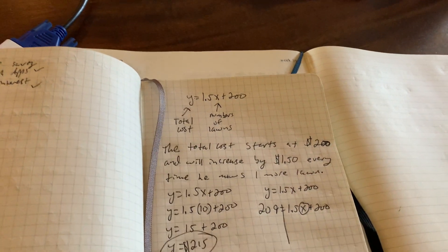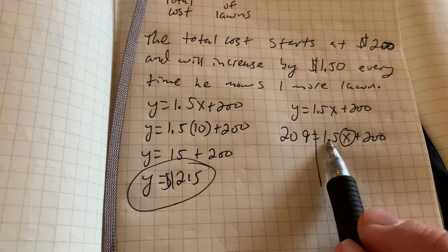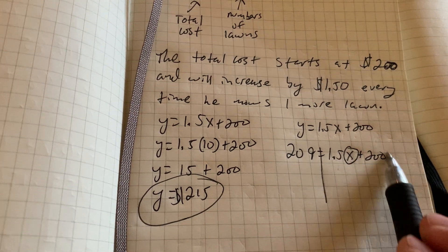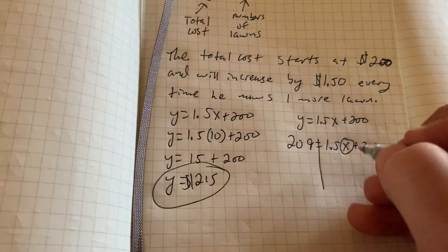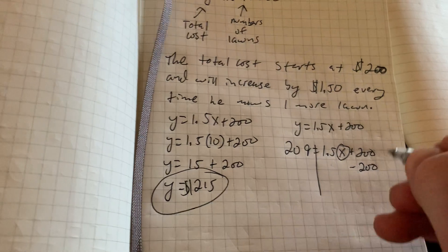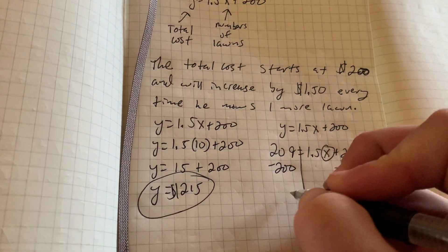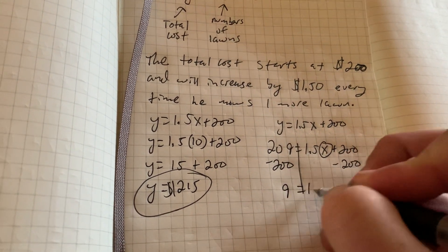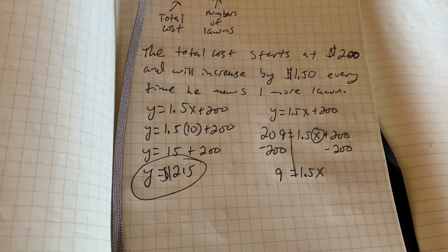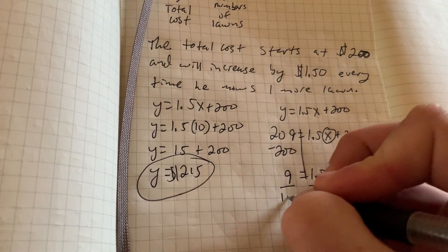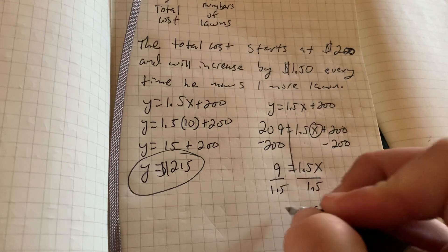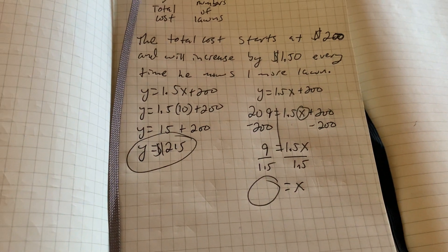Now I need to solve for X. We are going to save the close number until the end. We're going to do the opposite and get rid of the faraway number first. So the opposite of adding 200 is subtracting 200. So we'll get 9 equals 1.5X. And then we'll divide both sides by that 1.5. You'll just need to take that to your calculator to get your final answer.